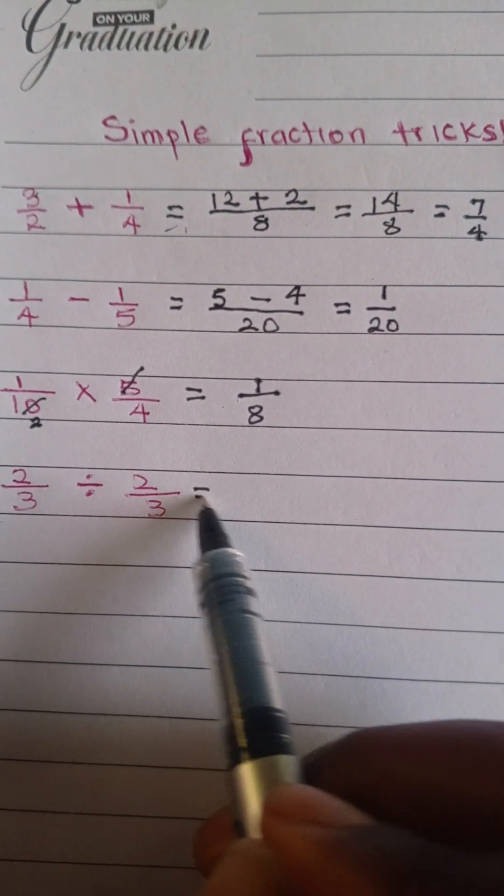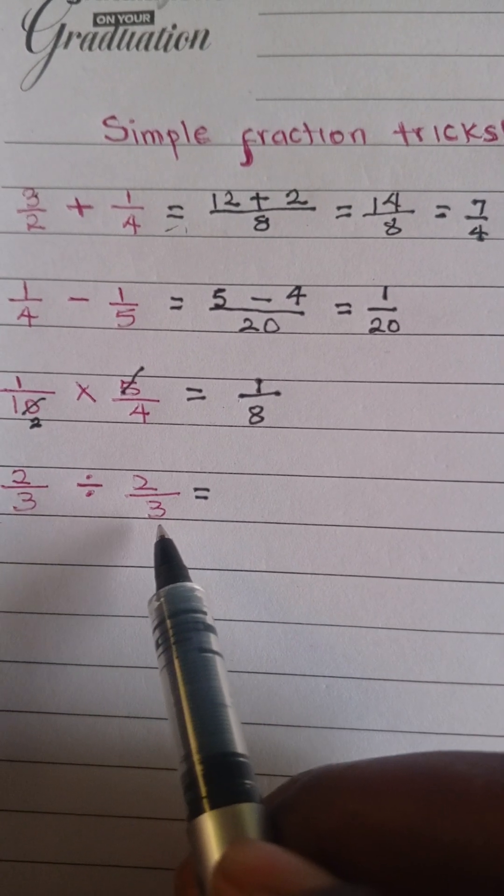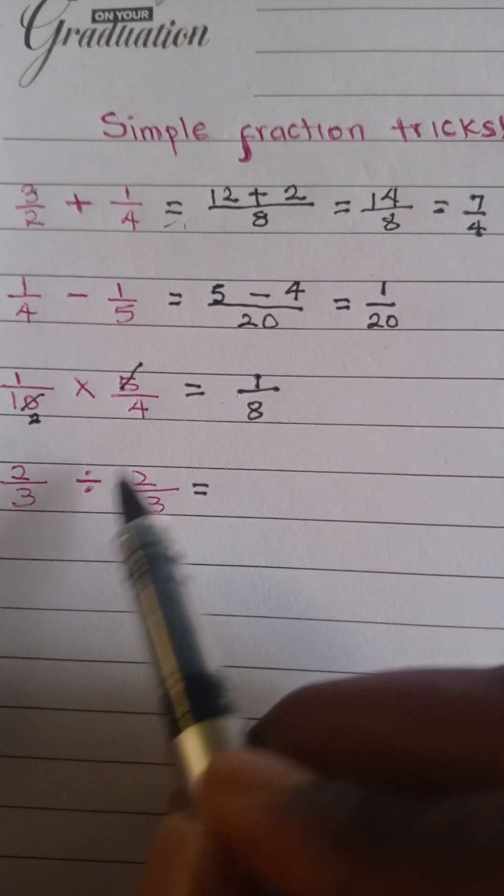The next one is 2 over 3 divided by 2 over 3. Now notice this: because there's a division here, you're going to flip this.